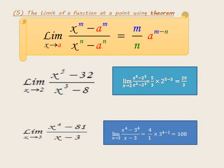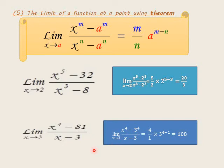Another example: limit as x approaches 3 of (x⁴ minus 81) over (x minus 3). Here x approaches 3, and 81 equals 3⁴. The denominator is (x minus 3) which equals (x¹ minus 3¹), so n equals 1. The value is (4 over 1) times 3^(4 minus 1) equals 4 times 3³ equals 4 times 27 equals 108.